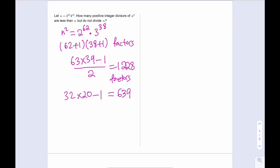if we subtract 1,228 minus 639, then we're going to be ending up with 589 factors of n squared that do not divide n.